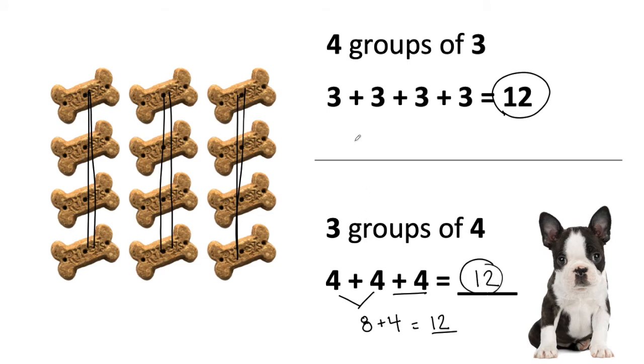Whether I describe an array using the rows, the equal groups going across, or whether I describe an array using the columns, the equal groups going up and down, the total will still be the same.